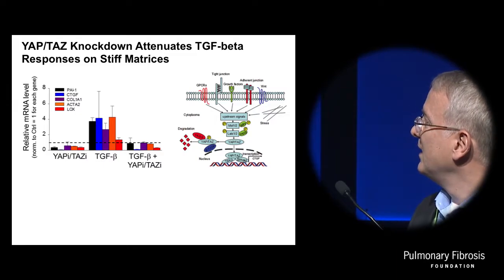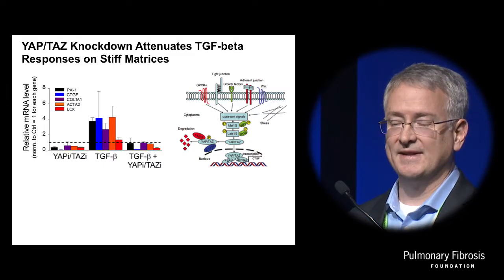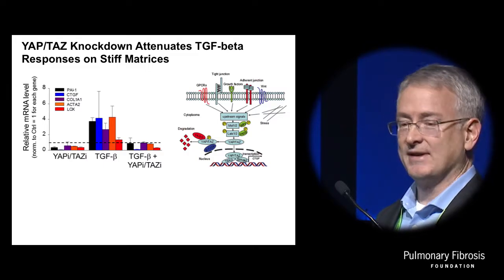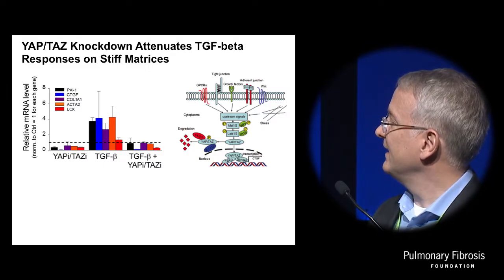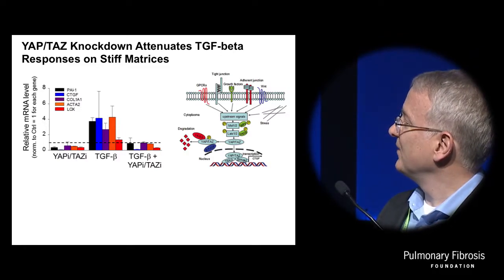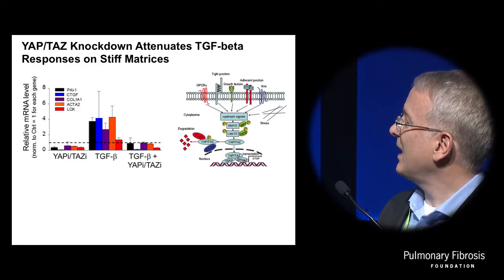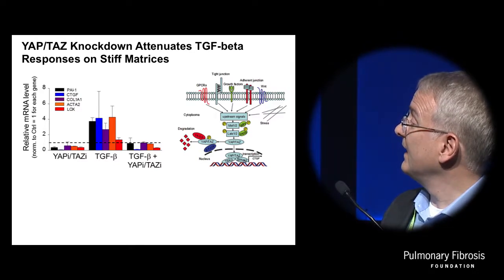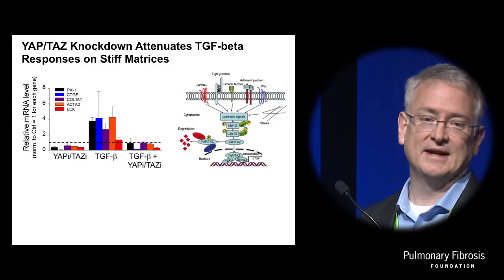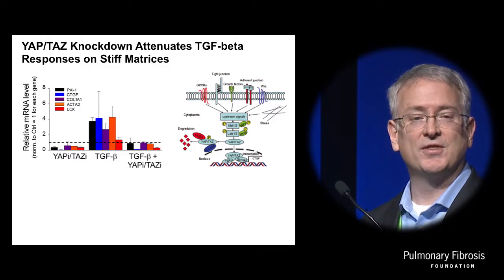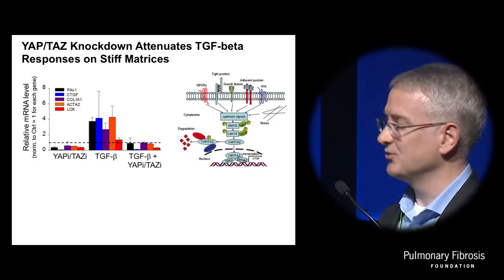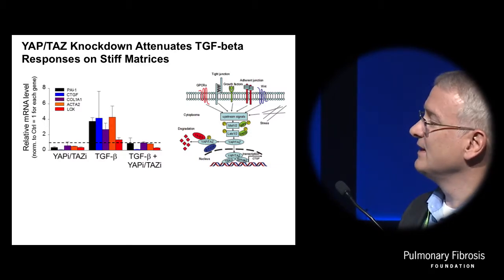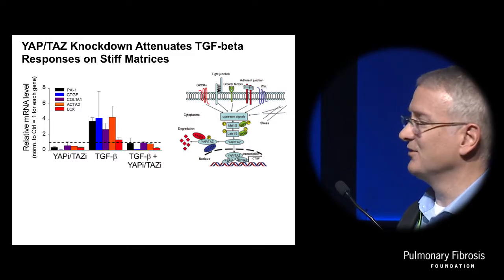Mechanistically, extracellular matrix and canonical receptor signaling pathways integrate through a kinase cascade that phosphorylates YAP and TAZ, sequestering them in the cytoplasm. In the absence of those signals, YAP and TAZ translocate to the nucleus where they interact with DNA through TEAD binding factors, and they also interact with SMADs that are downstream of TGF-beta signaling. So interrupting this pathway could have beneficial effects on both the receptor signaling pathways and the mechanical signals activating these cells.